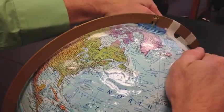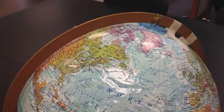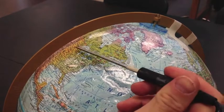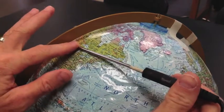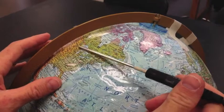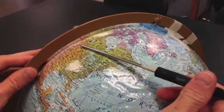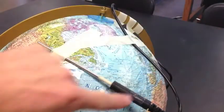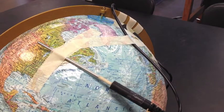The globe is kind of taped down, and then you're going to want to position the tip of the temperature probe on the globe directly where we are in Minneapolis. So I'm going to go ahead and do that. I taped down the probe and I taped down the wire so that the probe isn't falling down too much.